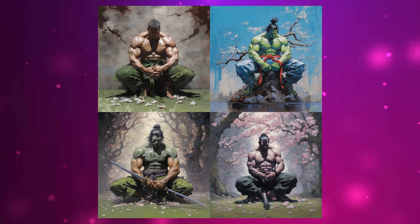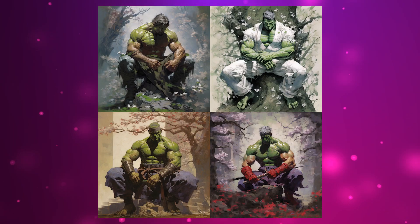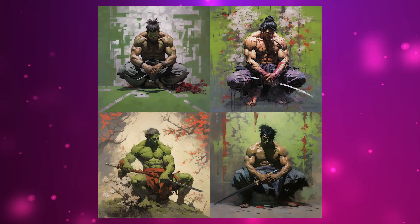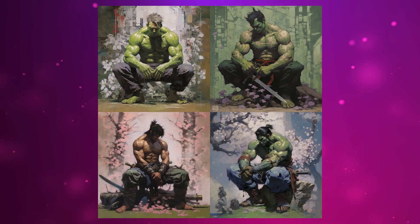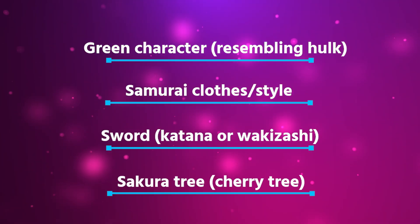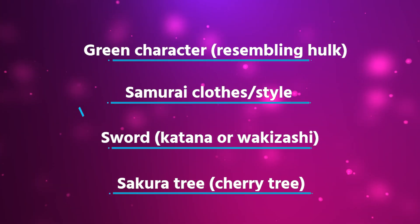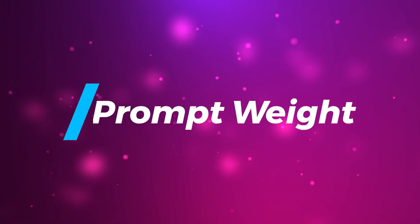I generated a few sets of images and as you can see we got a variation of human form, Hulk form, samurai and non-samurai results. Even though these are incredible, what I'm looking for is an image that includes a green character resembling Hulk, samurai clothes or style, a sword, and a sakura tree. This is where the weight prompt comes in.